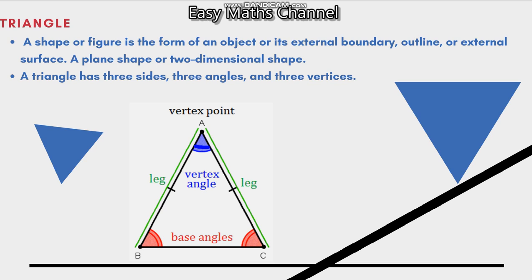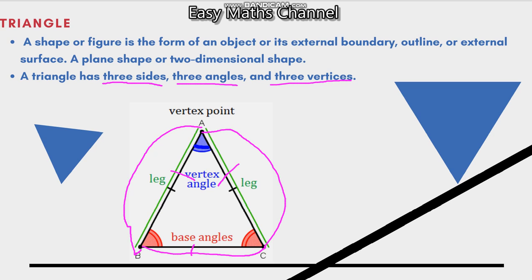It is a 2D shape. You can see the 2D shape. This is a side — A, B is a side; B, C is the next side; C, A is a side — a closed side.